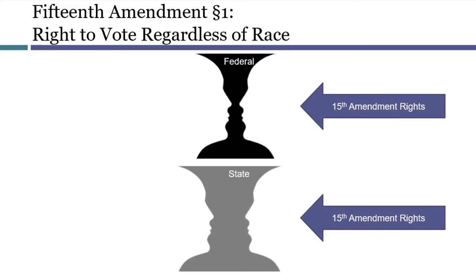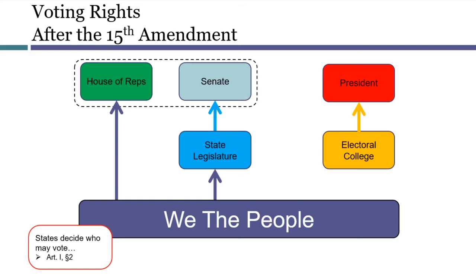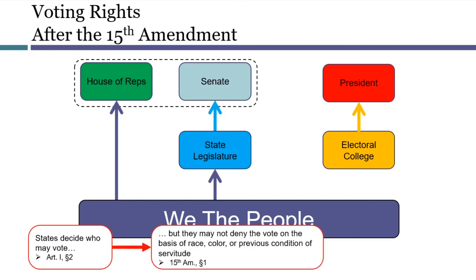Of course, it was the state governments who were in charge of the voting rules to begin with, and they were also the ones who were discriminating. So the impact was felt at the state level. After the 15th Amendment, states would still decide who could vote, but they were not allowed to restrict the vote based on race, color, or previous condition of servitude.